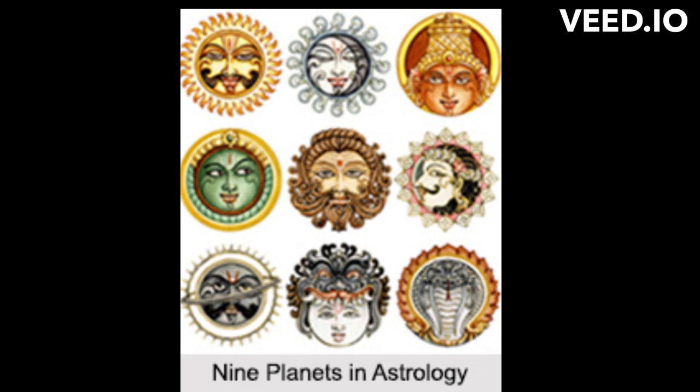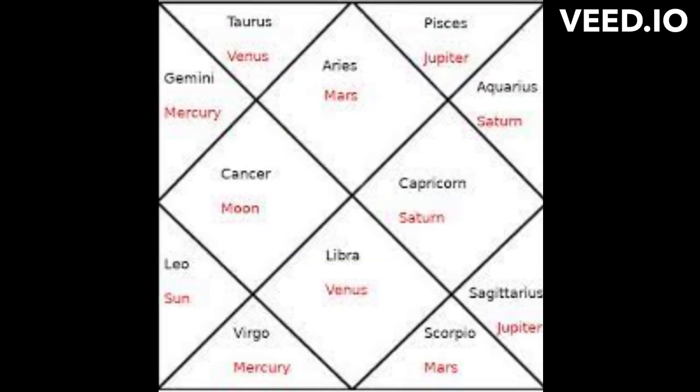There are nine planets. Each sign is ruled by a planet which becomes the lord of the house in which the sign falls.